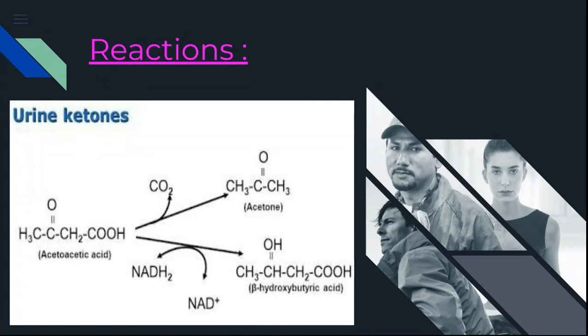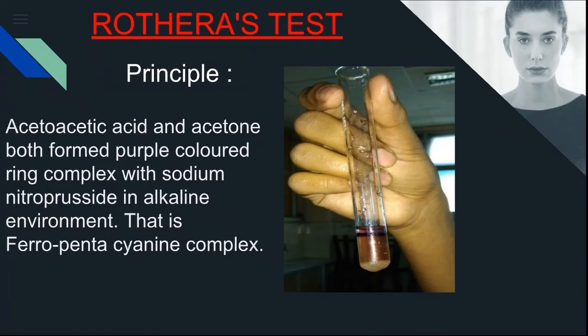The principle of Rothera's test: acetoacetic acid and acetone both form a purple color ring with sodium nitroprusside in an alkaline environment. The purple coloring forms between two layers, and this purple color complex is chemically named ferro pentacyanine complex — commonly asked in viva exams.